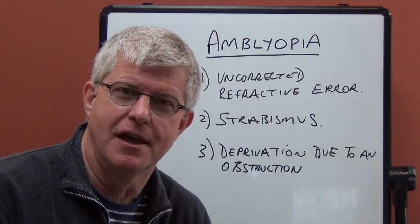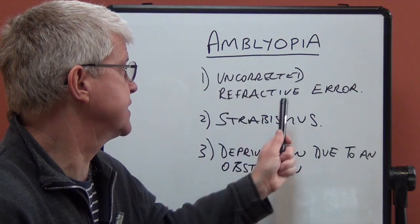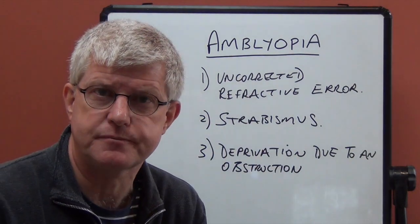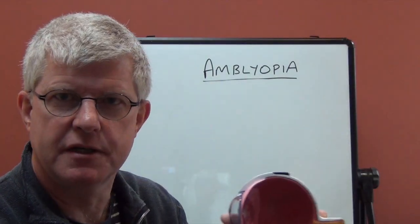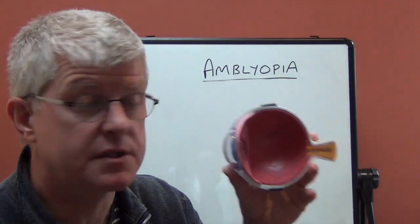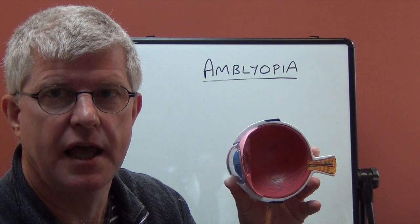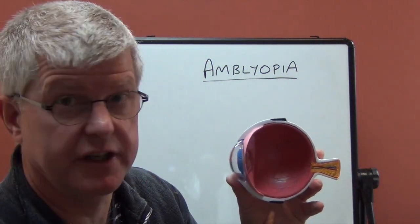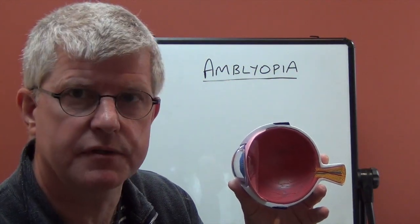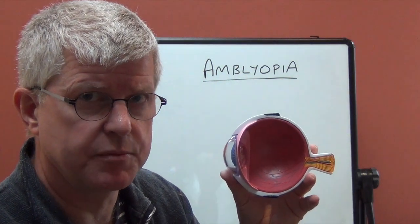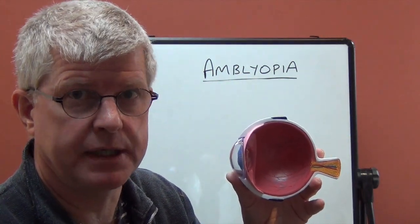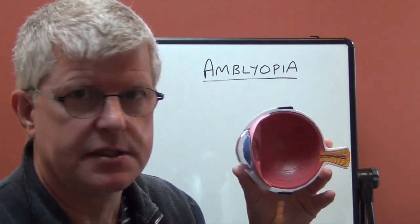So, well, in this video we're going to be looking at uncorrected refractive error. I'm just moving a bit closer to the camera now because I want to use this model to explain a little bit about how ametropia works and how it affects the eye and the development of the visual pathway to the brain and why is it such a problem and can cause amblyopia.